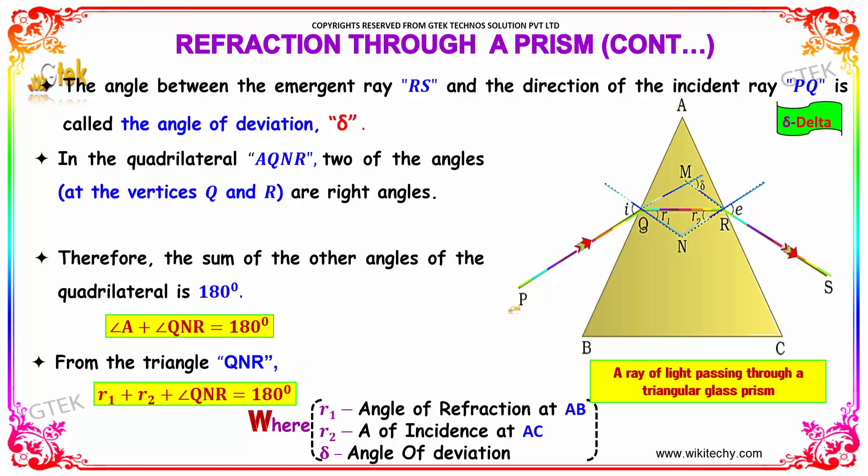So r1 is the angle of refraction at AB, r2 is the angle of incidence at AC, and delta is the angle of deviation.